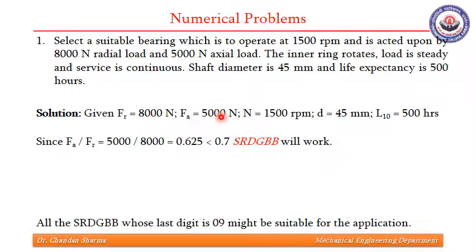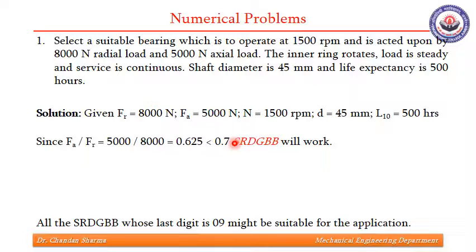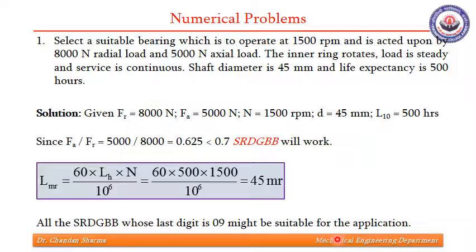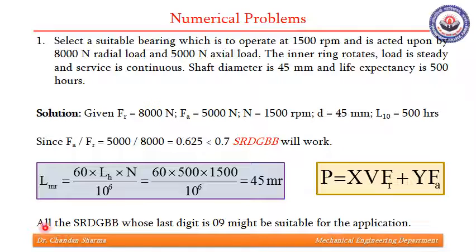Fr is given, Fa is given, N is given, and D is 45 mm. L10 life is given as 500 hours. Since Fa and Fr are given to us, there is no need to find these loads. We will check the ratio of Fa by Fr — it comes out to be 0.625. Since Fa by Fr is less than 0.7, a single row deep groove ball bearing will work. So we have fixed that a single row deep groove ball bearing might be suitable. Since life is given in hours, we convert it into million revolutions, which comes out to be 45 million revolutions.